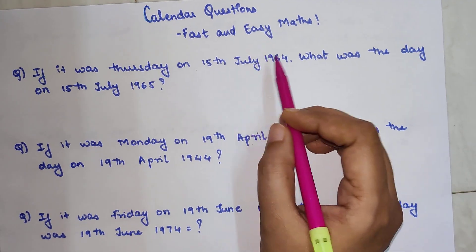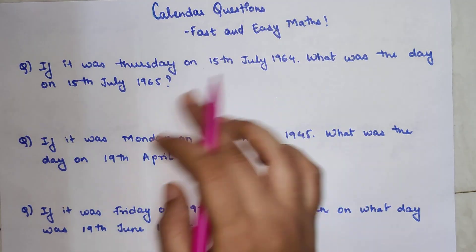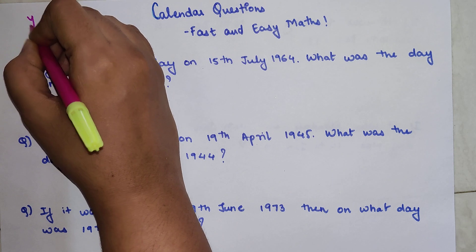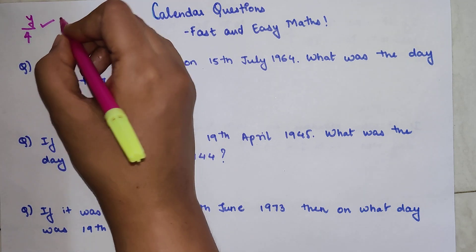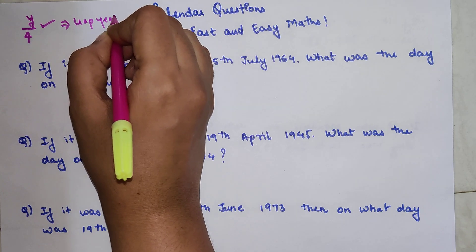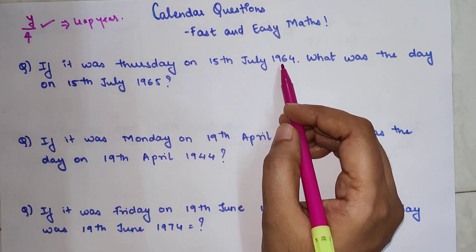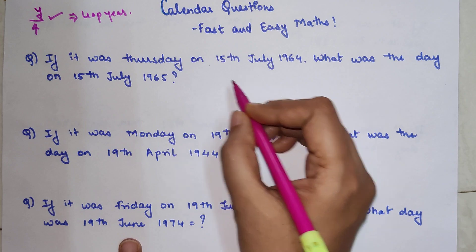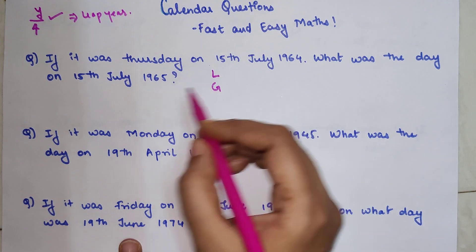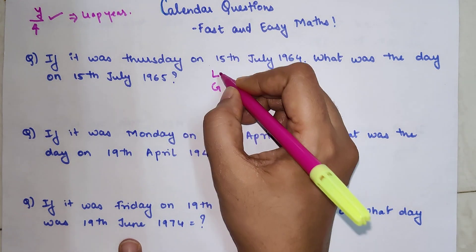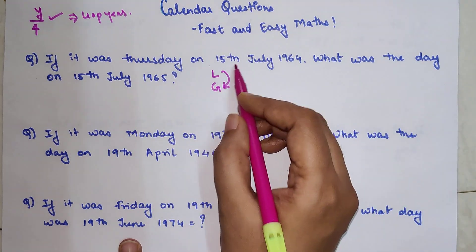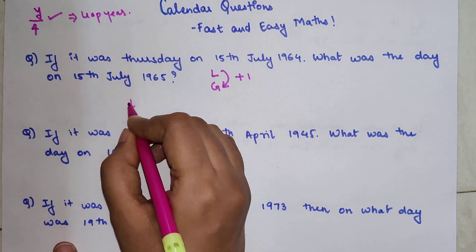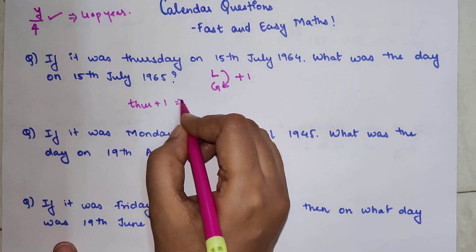Whenever something like this comes across, you have to check whether any of the given years is a leap year. A leap year is one that is completely divisible by 4. Now, 1964 is completely divisible by 4, so it is a leap year. Whenever you are going from a leap year to a general year — and 1965 is a general year — the day gets increased by 1.